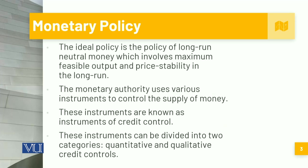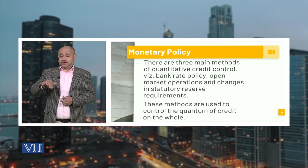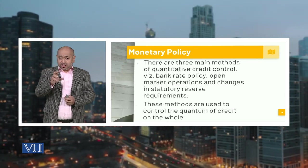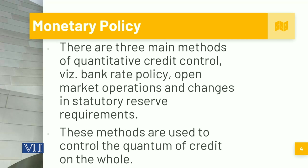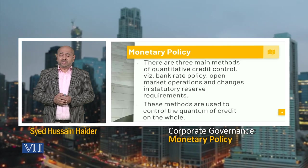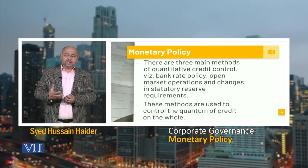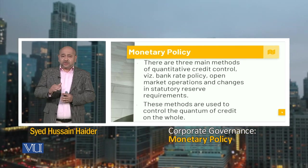We talk about different instruments of credit control, which can be divided into two categories: quantitative and qualitative. Under the quantitative approach, we have credit control vis-à-vis different banks, through which the State Bank regulates all financial institutions within the country. Then there are open market operations, and changes in the statutory reserve requirements, which tend to restrict the different banks.